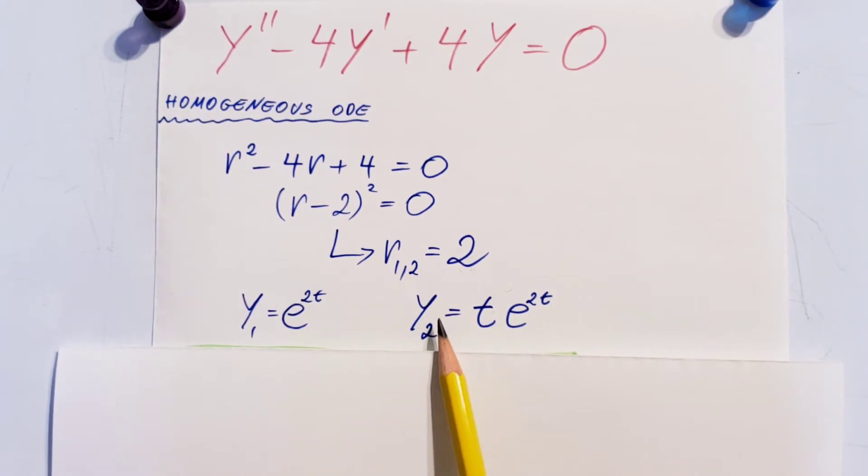For the second solution, don't just write e^(2t) again. You don't want the two solutions to be the same, so we need to include t: y₂ = t·e^(2t).